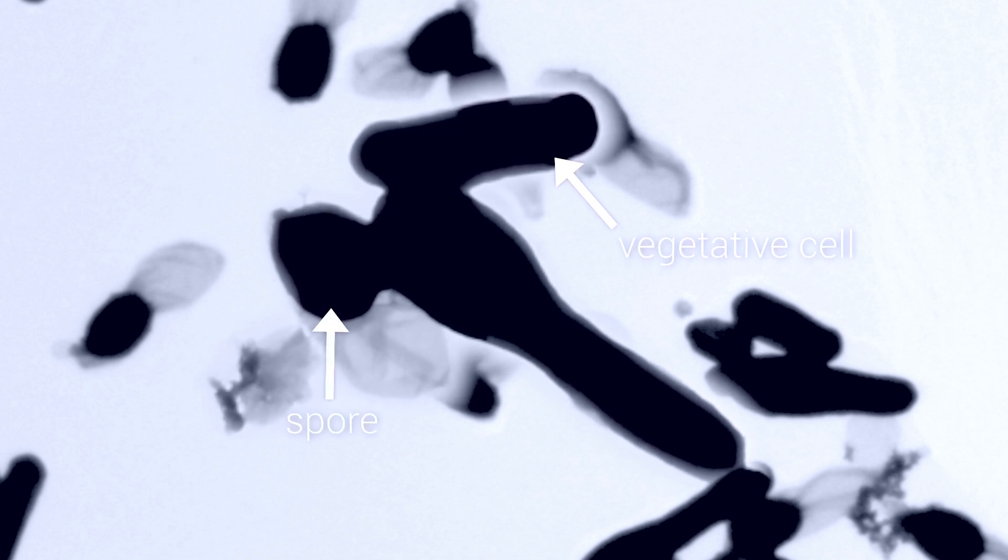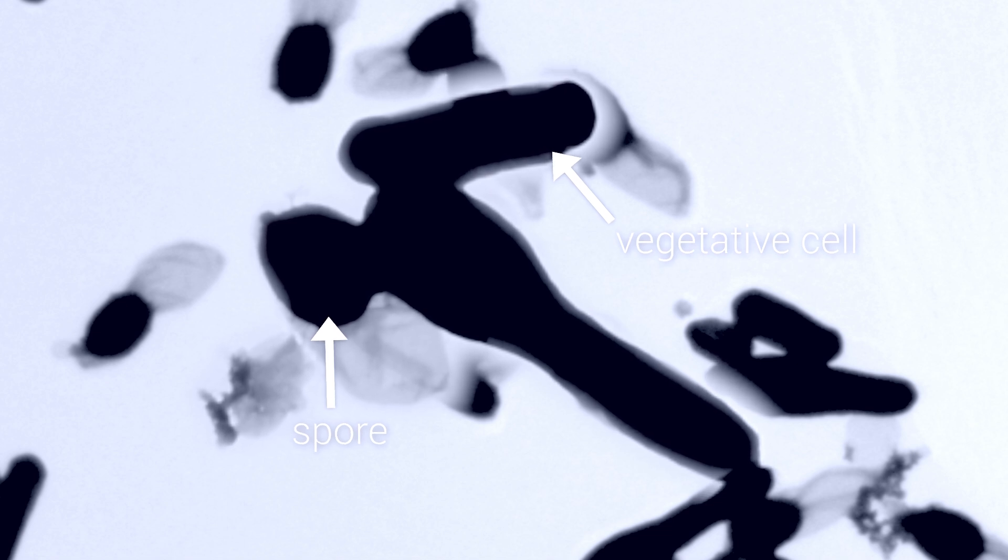These spores, once they find themselves in favorable conditions, will germinate and produce vegetative cells again. If you arm the spores with therapeutic approaches, the strain develops and grows in these hypoxic regions, expressing a gene of interest.